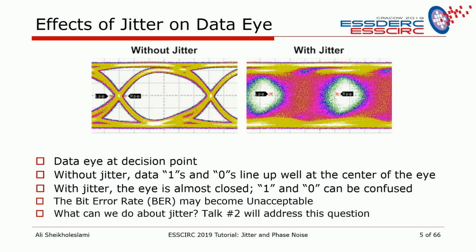I've shown this same concept using an eye diagram. The received waveform — a bunch of bits — is wrapped around and plotted for every UI. You can see all the ones lining up at the top and all the zeros at the bottom with good separation. But when you have jitter, the eye diagram shows a lot of dots, the distinction between one and zero starts to merge, and a one can be taken as a zero or vice versa. This is how bit error rate is affected by jitter.